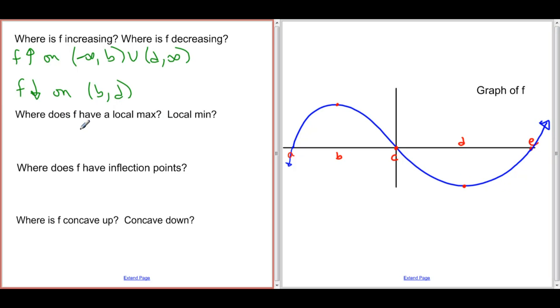Where does f have a local max? Well, f has a local max when f prime changes from positive to negative. If you look here, f prime is the slope of f, and f prime changes from positive to negative at x equals b. So we have a local max at x equals b.